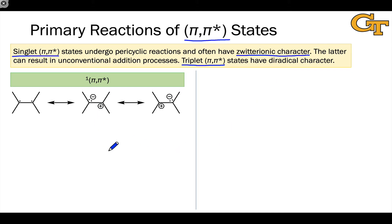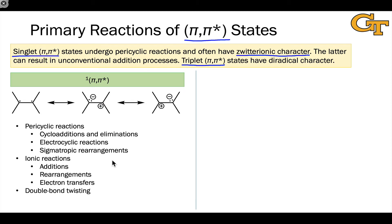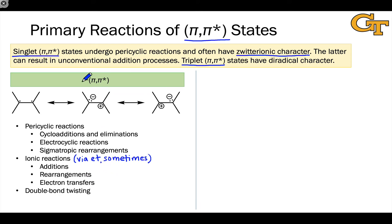Singlet ππ* states very often undergo pericyclic reactions — concerted pericyclic reactions such as cycloadditions, cycloeliminations, electrocyclic reactions, and sigmatropic rearrangements. They also engage in ionic reactions, which may or may not involve electron transfer, such as nucleophilic or electrophilic additions and rearrangements — very common for aromatic ππ* states — and electron transfers. A very important general reaction of the singlet ππ* state is double bond twisting, or cis-trans isomerization, also called E/Z isomerization.